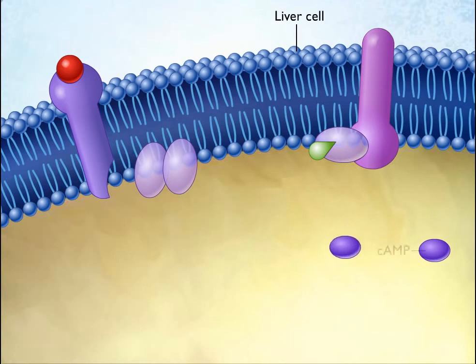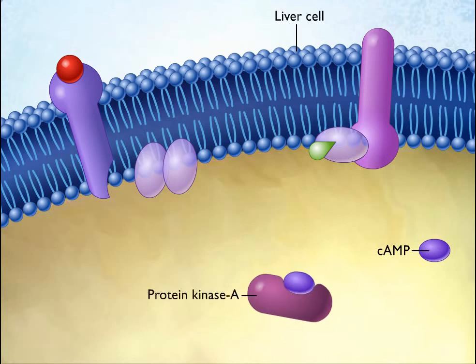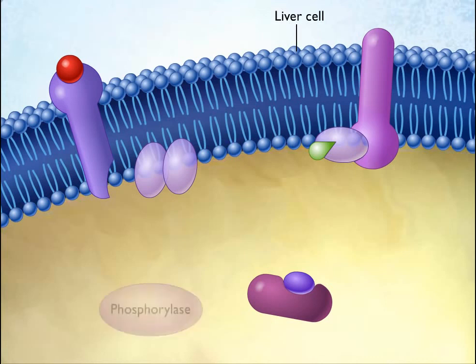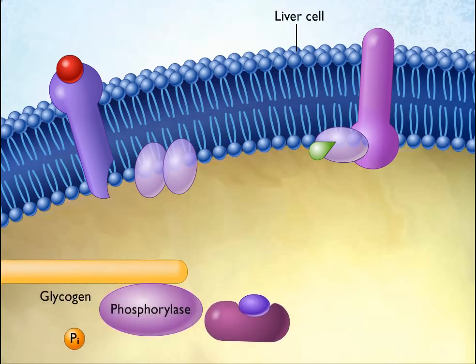The cAMP formed at the inner surface of the membrane diffuses within the cytoplasm, where it binds to and activates protein kinase A, an enzyme that adds phosphate groups to specific cellular proteins. In liver cells, protein kinase A phosphorylates and thereby activates another enzyme called phosphorylase, which converts glycogen into glucose-6-phosphate.